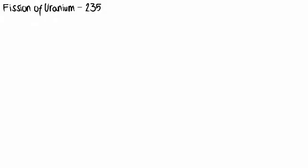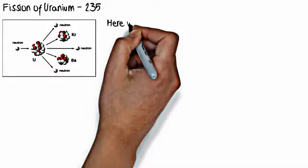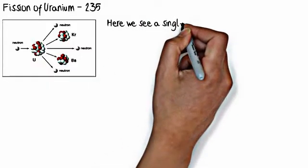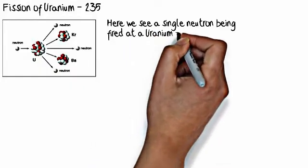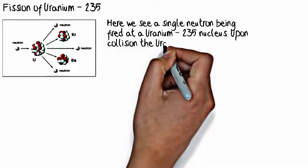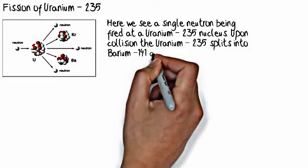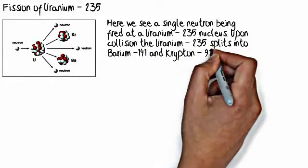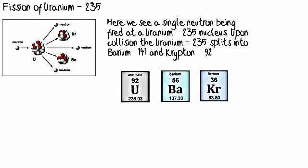Let's talk about an actual nuclear transformation reaction. Here is the fission of uranium. We see a single neutron being fired at a uranium-235 nucleus. Upon collision, the uranium-235 splits into barium-141 and krypton-92. I'm going to bring up the different element squares from the periodic table. Uranium has 92 protons, barium has 56, and krypton has 36.